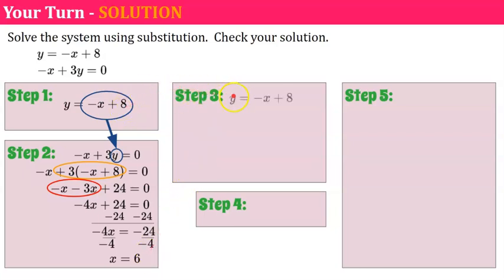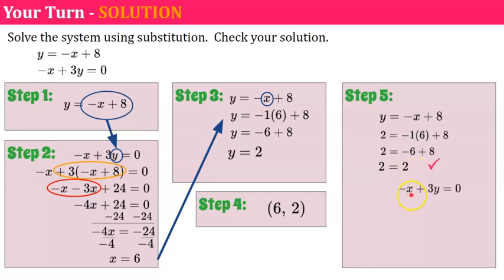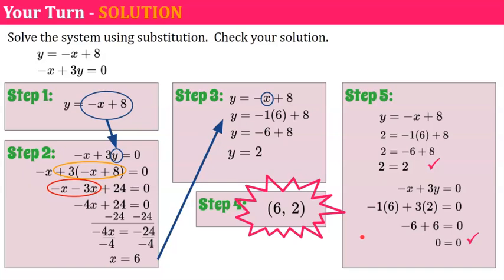Step three: write down the equation from step one and bring up x equals 6. Remember this is negative 1 times x, so negative 1 times 6 is negative 6. Negative 6 plus 8 gives y equals 2. Solution: ordered pair (6, 2). Check: first equation — replace y with 2; negative 1 times 6 is negative 6, plus 8 is 2 — it checks. Second equation — negative 1 times 6 is negative 6, plus 3 times 2 is 6. These are opposites and give 0 — it checks. Solution is the ordered pair (6, 2).